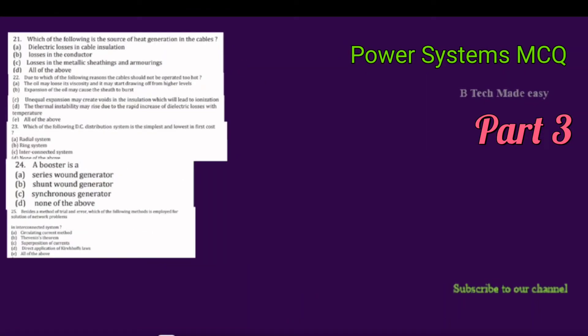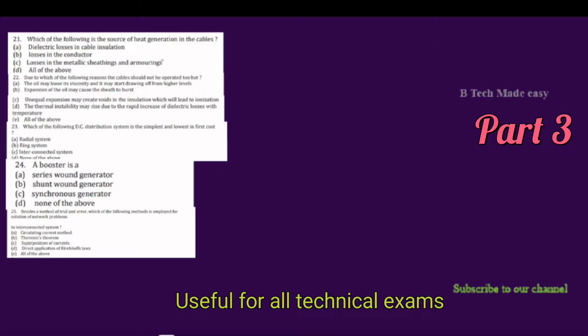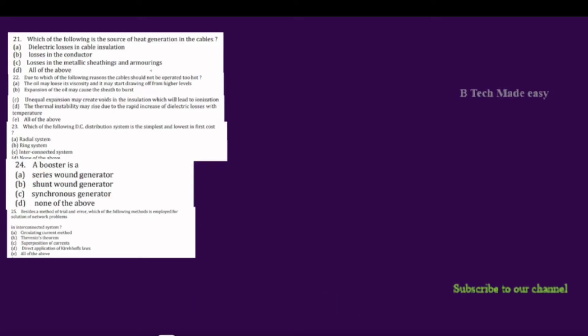In the third part, the first question is: which of the following is the source of heat generation in cables? The options are: dielectric losses in the cable insulation, losses in the conductor, losses in the metal sheets and armoring, and all of them.